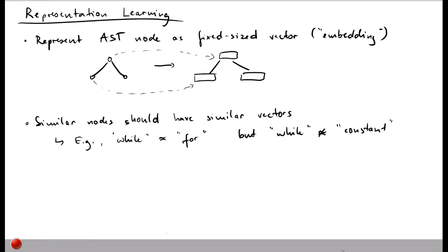This embedding is learned in a separate pre-training step. We do not go into detail here, but all you need to know is that these representations are learned independently of the convolutional neural network itself.